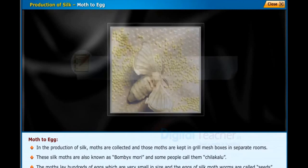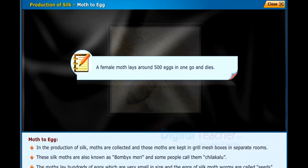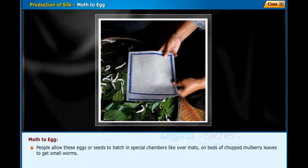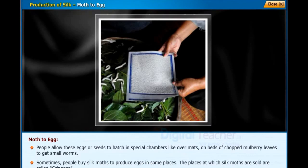A female moth lays around 500 eggs in one go and then dies. People allow these eggs or seeds to hatch in special chambers, over mats on beds of chopped mulberry leaves, to get small worms. Sometimes people buy silk moths to produce eggs. The places at which silk moths are sold are called green edges.